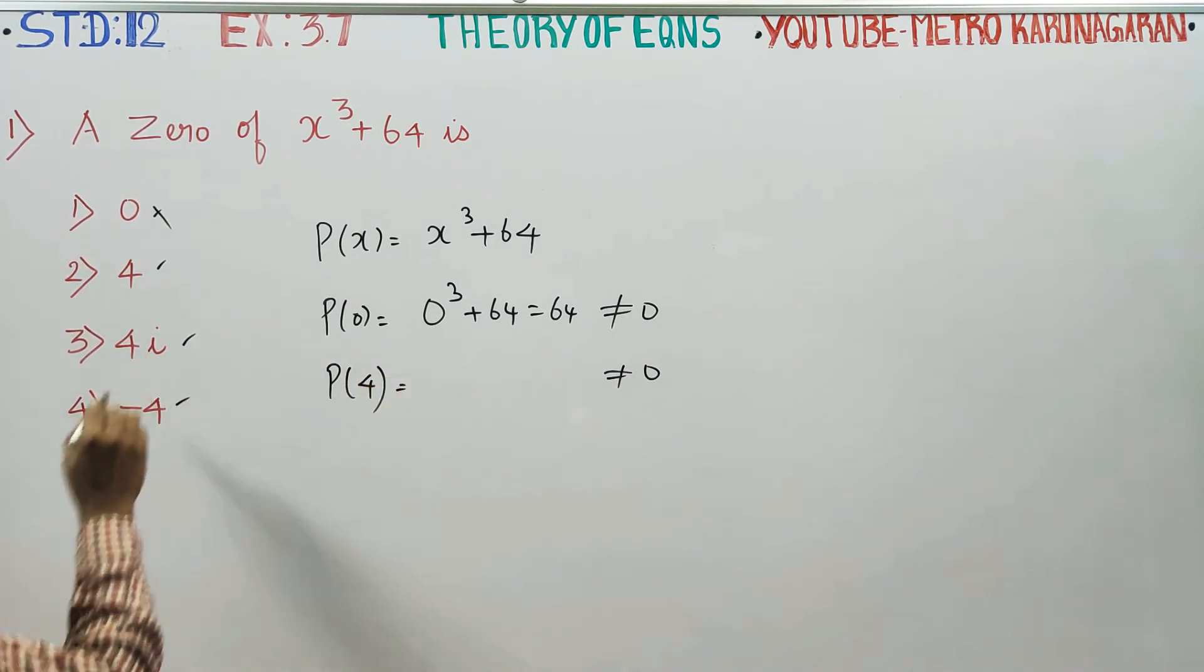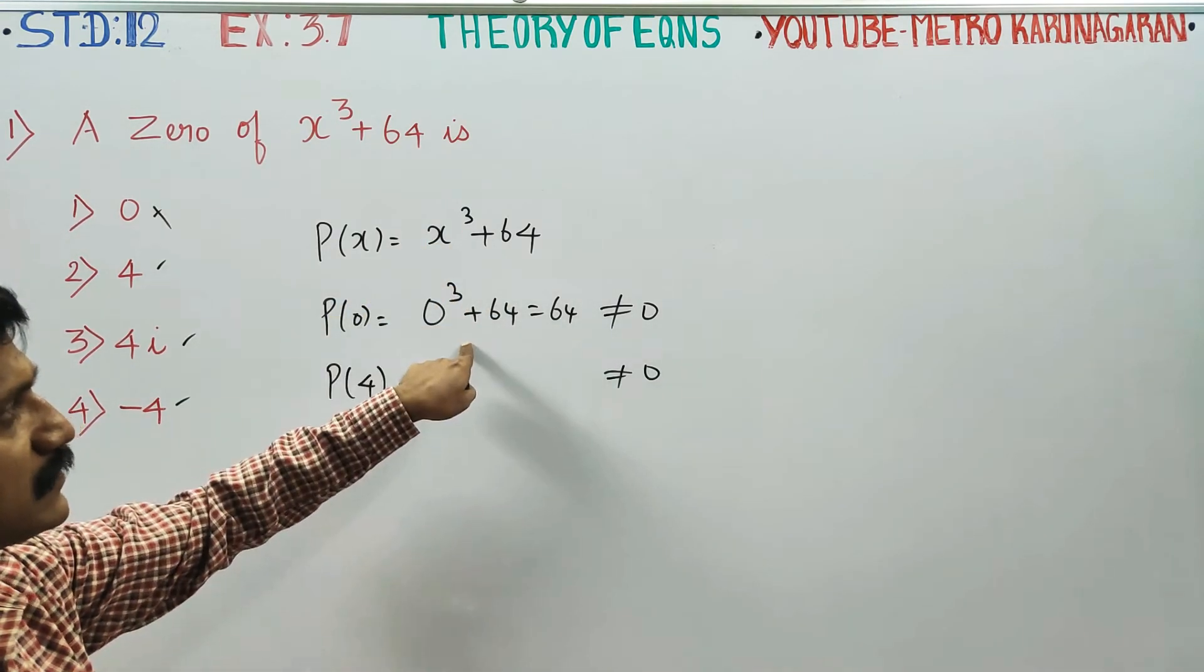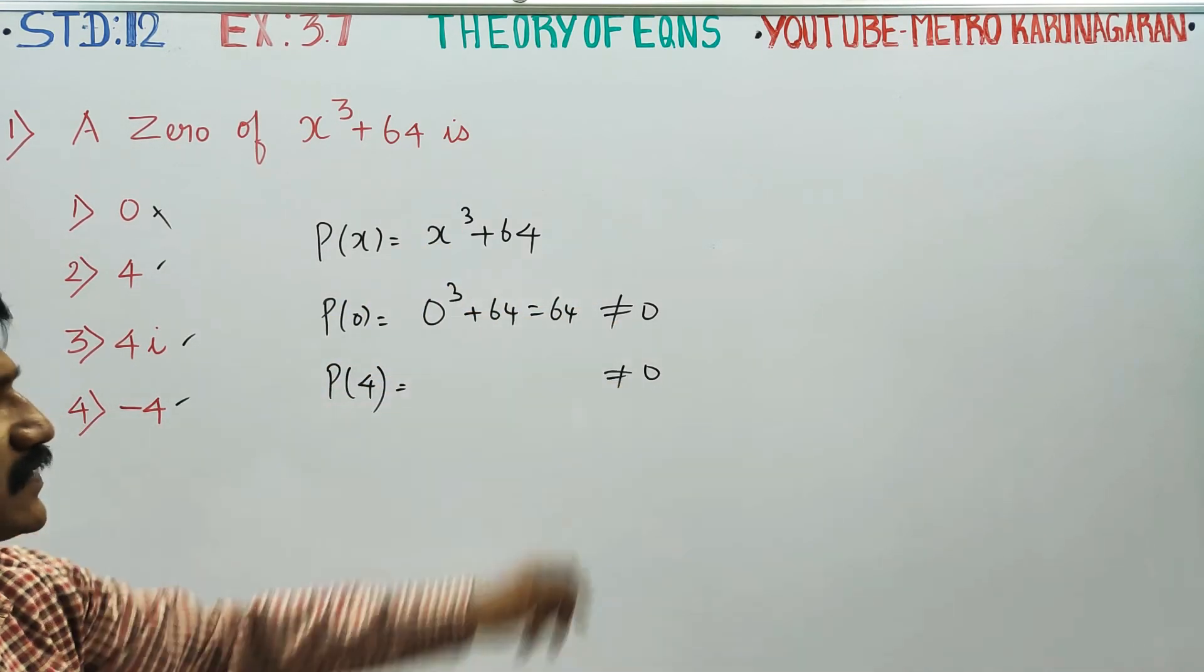Next, if you use i, i³ or i² = -1. When you add 64 it doesn't equal 0.